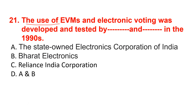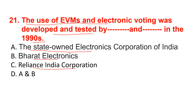The use of EVMs and electronic voting was developed and tested by whom in the 1990s? Options are the State Owned Electronics Corporation of India, Bharat Electronics, Reliance India Corporation, or A and B. The correct option is option D — A and B.